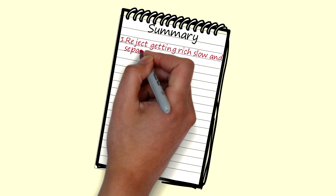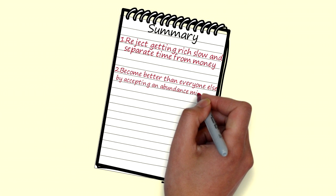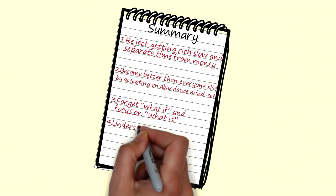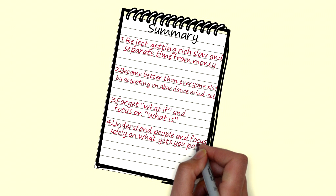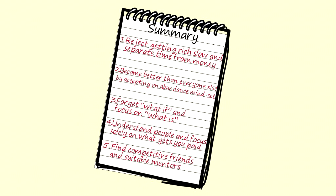To summarize: reject getting rich slow and separate time from money. Become better than everyone else by accepting an abundance mindset. Forget what if and focus on what is. Understand people and focus solely on what gets you paid. And find competitive friends and suitable mentors. Thank you for watching and as always, keep reading as much as you can.